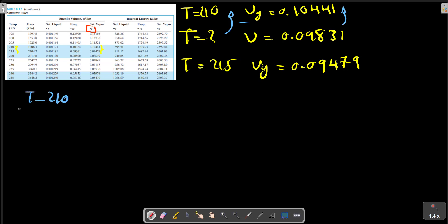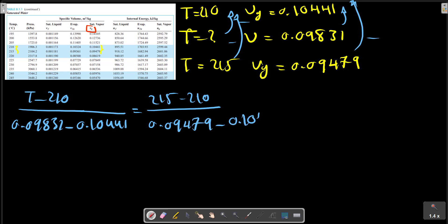Using the interpolation formula, T2 can be calculated, and P2 is about 2.05 megapascals.